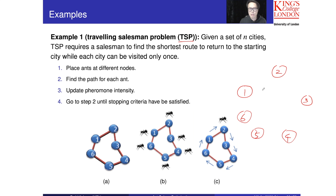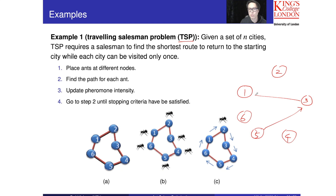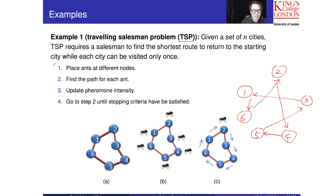In this problem we do not have a fixed starting point, so we can start at any node. For example, starting at node five, we go through all nodes exactly once: five goes to three, three goes to one, one goes to six, six goes to two, two goes to four, and then finally back to five.